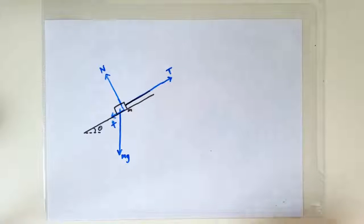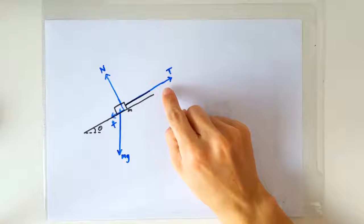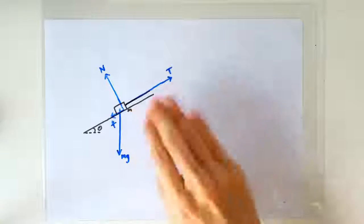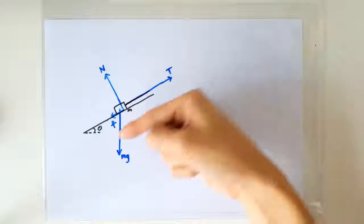So let's just assume that the situation we have is that the tension is quite large, the block is tending to slide upward, so the friction is acting in this direction to hold it back.